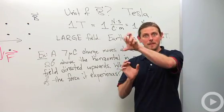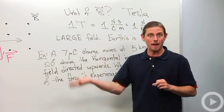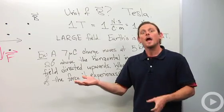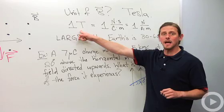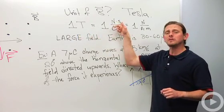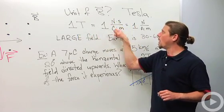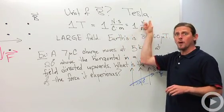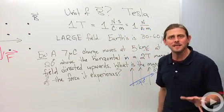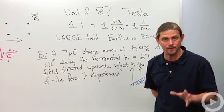If we solve for the Teslas, then we end up getting one Tesla is equal to one newton second per coulomb meter, which we can also write as one newton per ampere meter. A Tesla is a very large magnetic field.